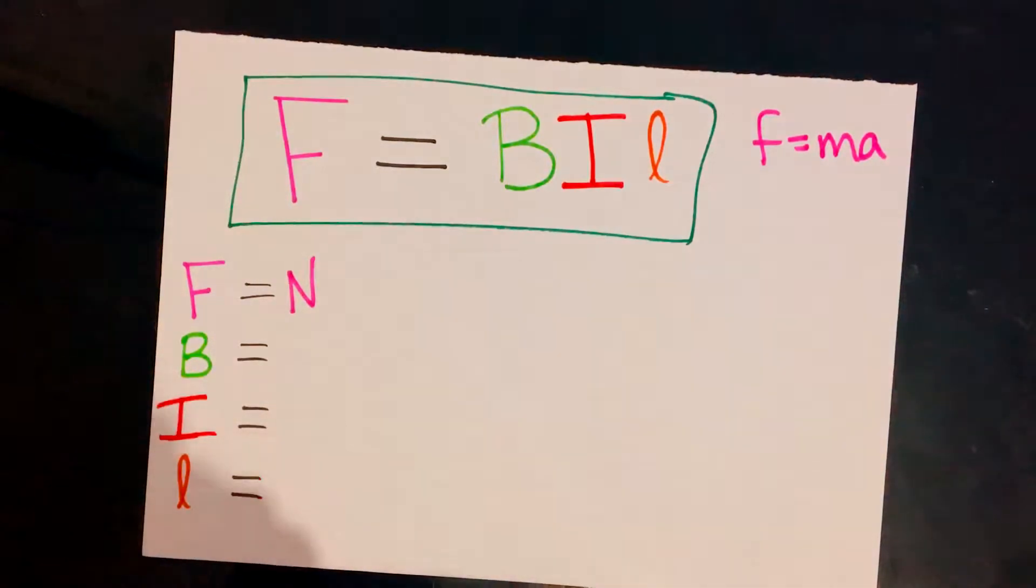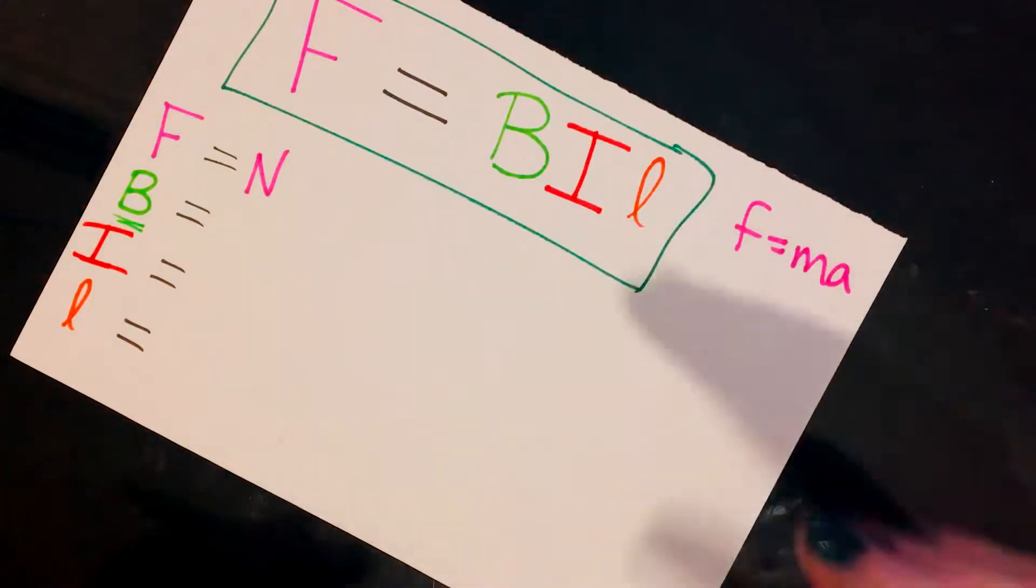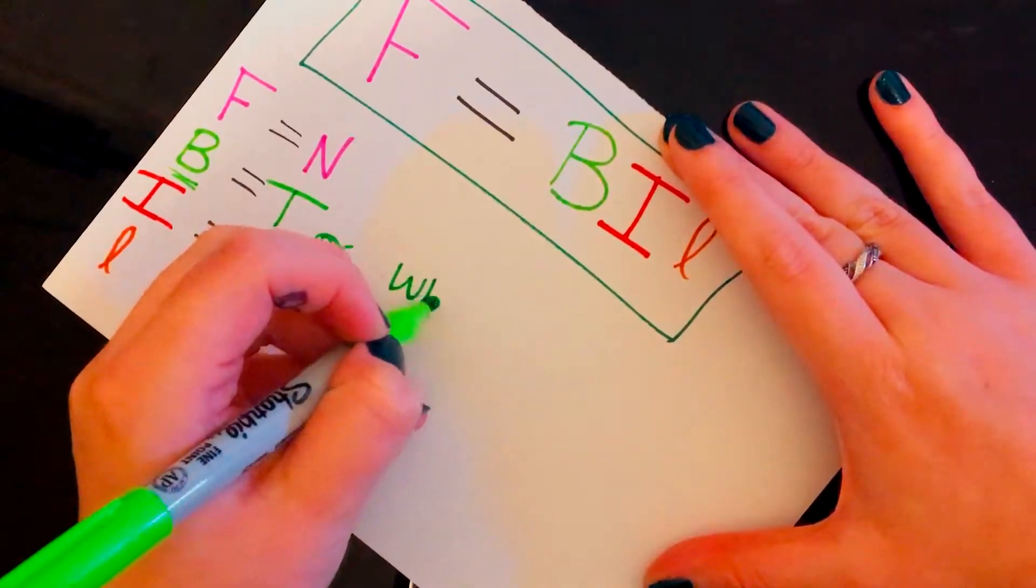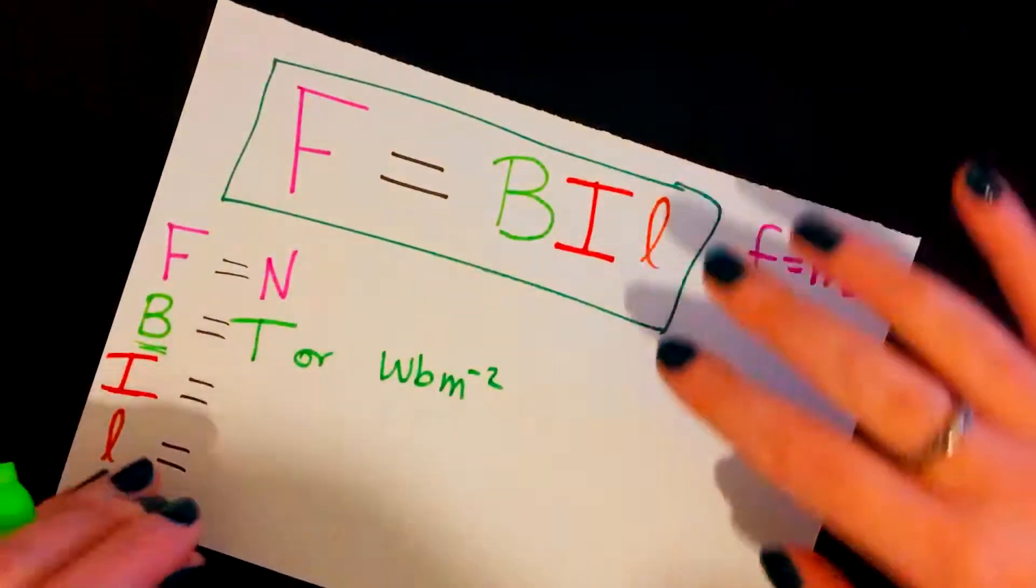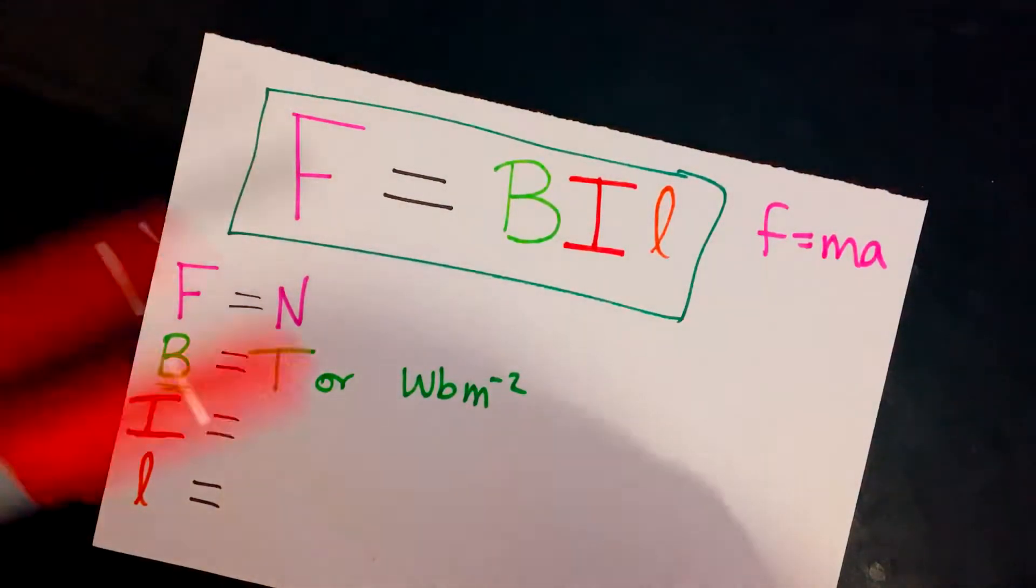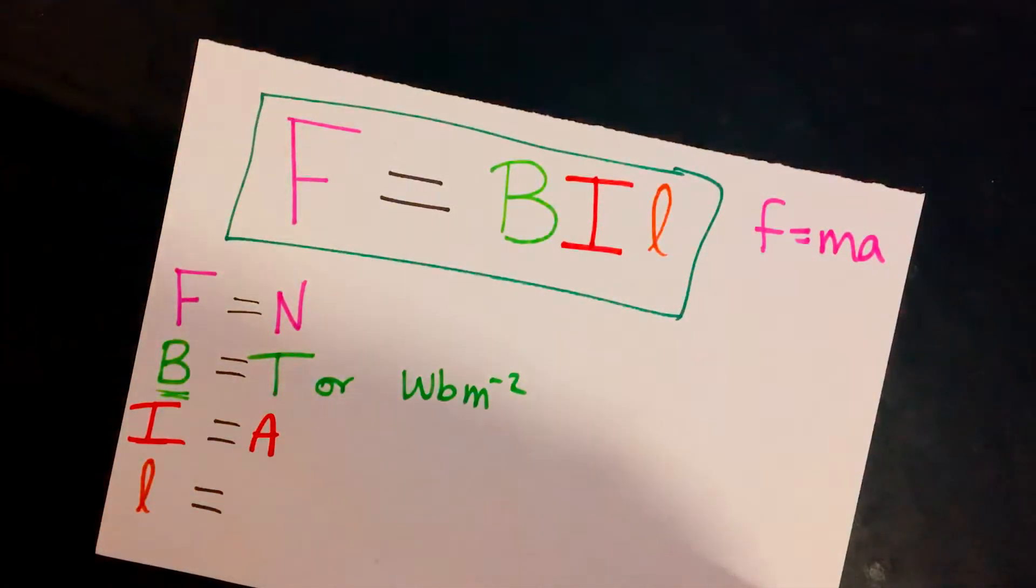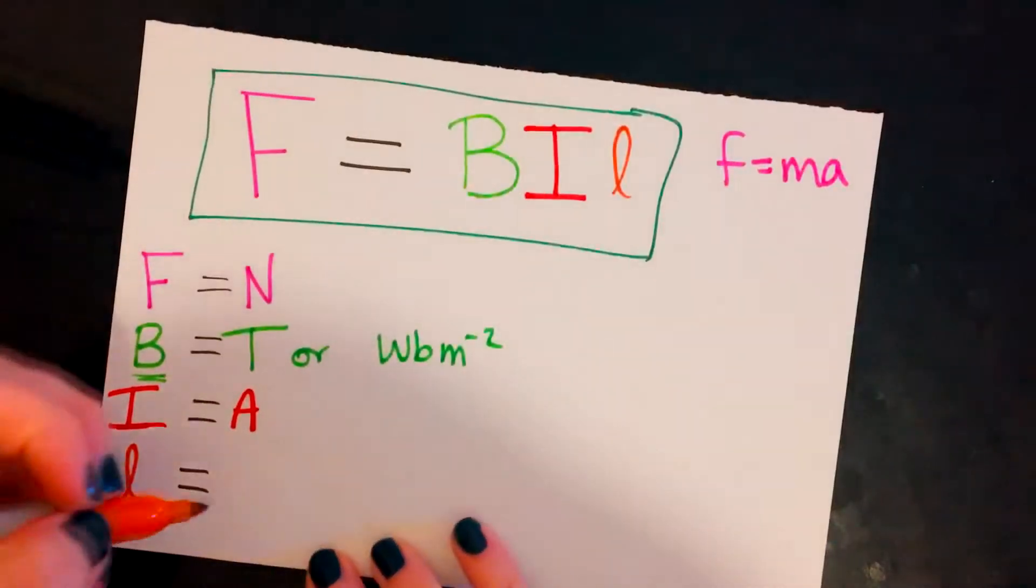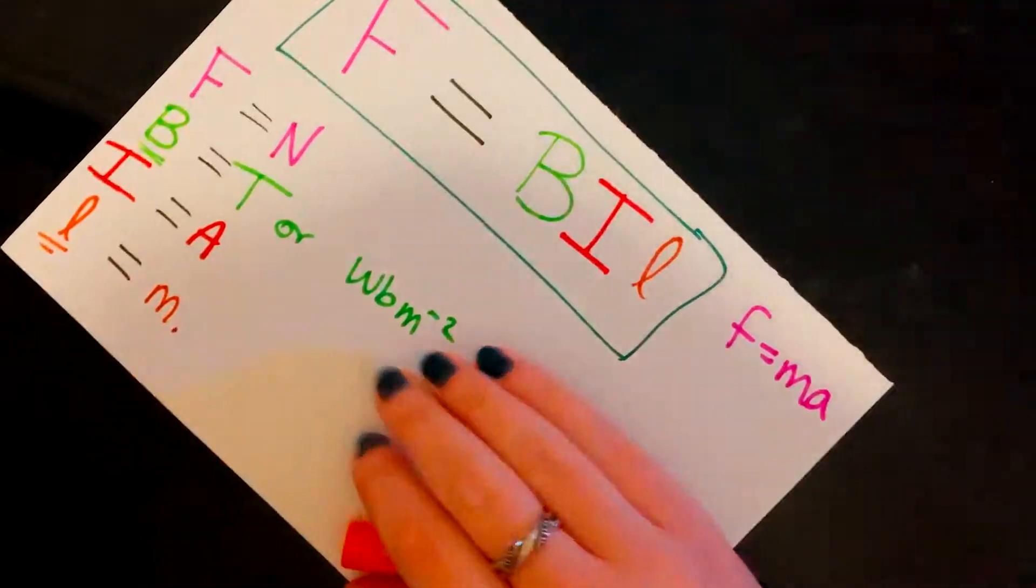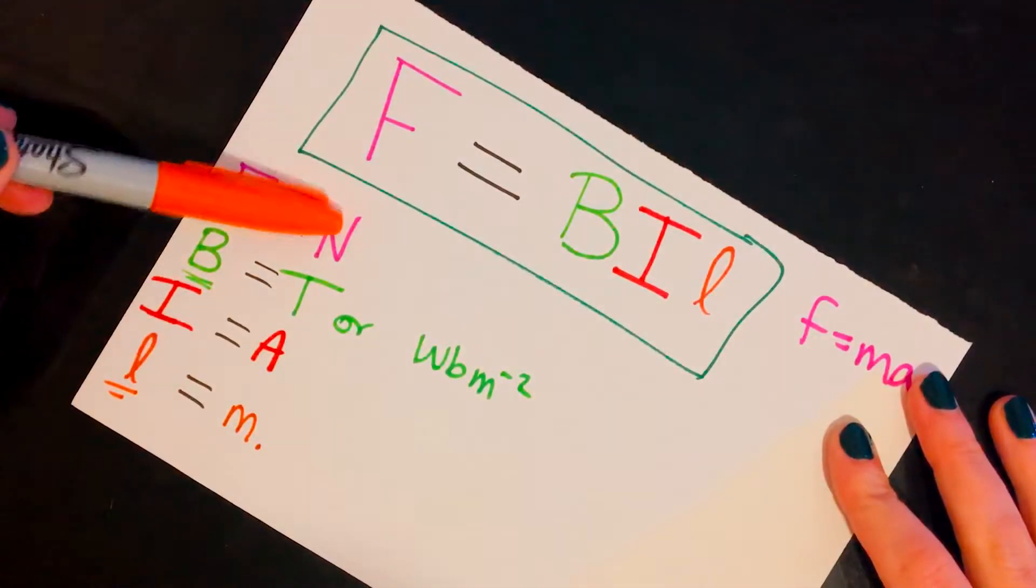Magnetic field and magnetic flux density, we've already spoken about this in a previous video. If you've not seen it, make sure you're going to have a quick look, but that is measured in Teslas or Webers per meter squared. So that's one way of finding your magnetic flux density. I is your current, measured in amps. Again, you should know this from GCSE. And L is the length of wire in the field. This L is measured in meters. So you now know what each symbol represents and what they are measured in.